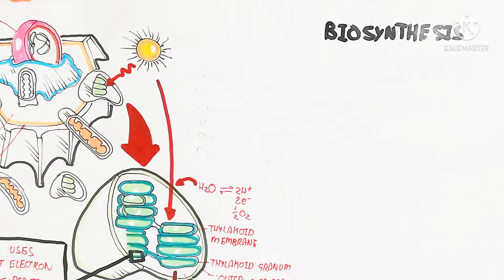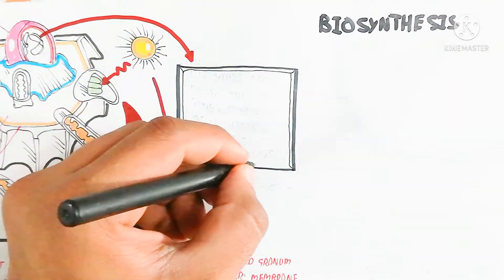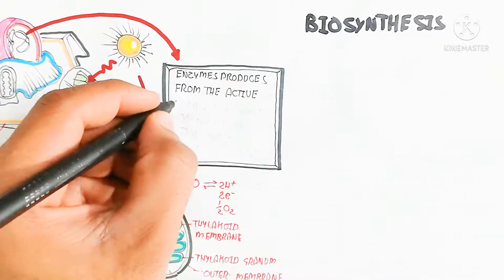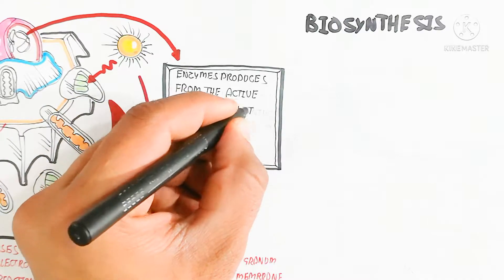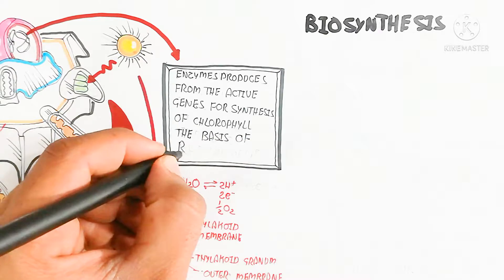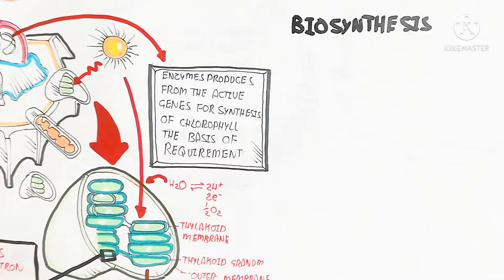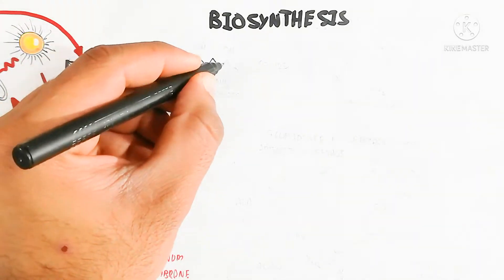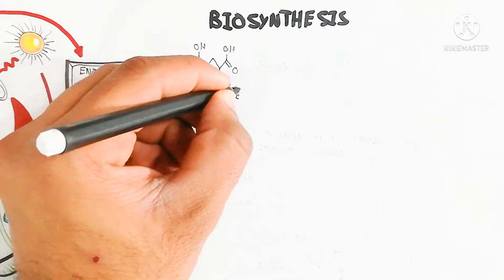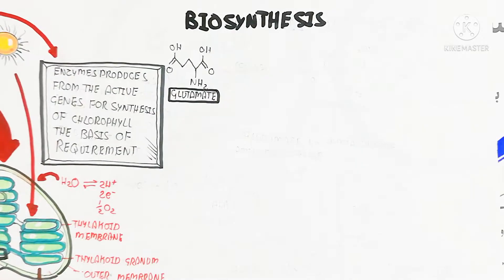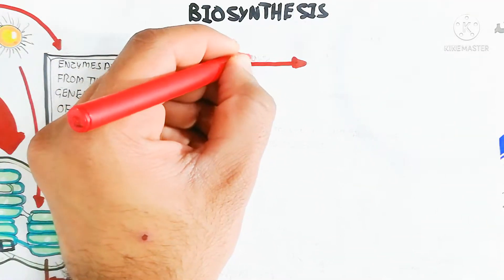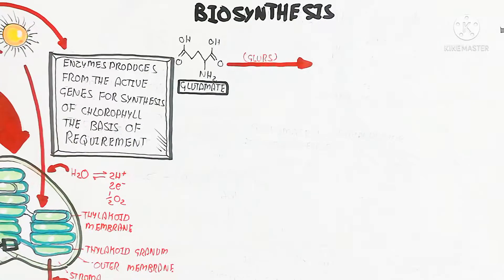Let's begin to understand the biosynthesis without wasting any time. Here is the chromosome, which contains genes, and these genes are basically active genes that produce enzymes. For synthesis of chlorophyll, there are many enzymes used. Based on the requirement — if light is high and the plant needs more absorption of light to produce fruit, etc., and the shoot system demands it — more chlorophyll is needed. So the need for energy, production, and growth of the plant will increase.